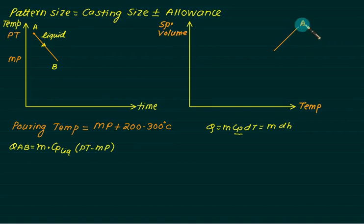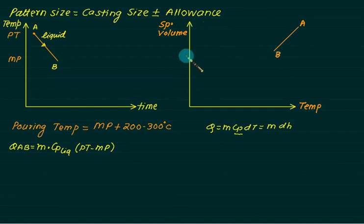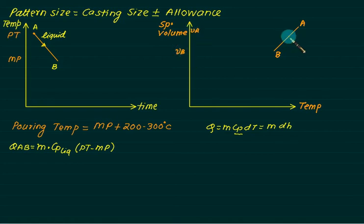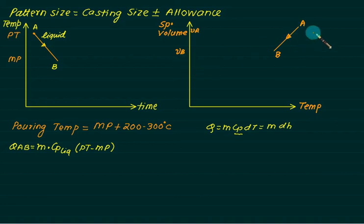We are at point A — the pouring temperature. At point B we are at the melting temperature. The volume has decreased from Va to Vb. So the specific volume has decreased from A to B, and this is called liquid shrinkage.